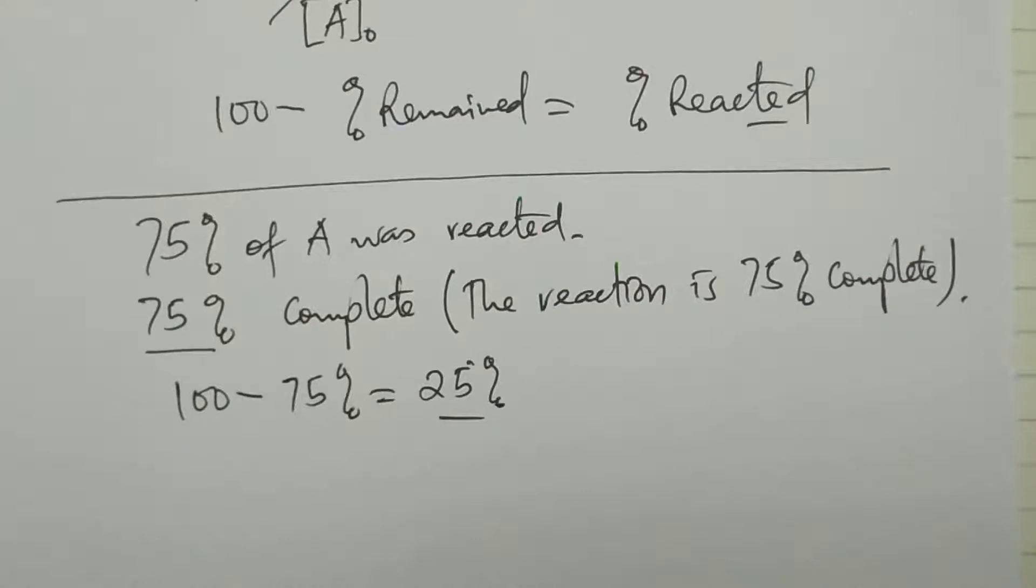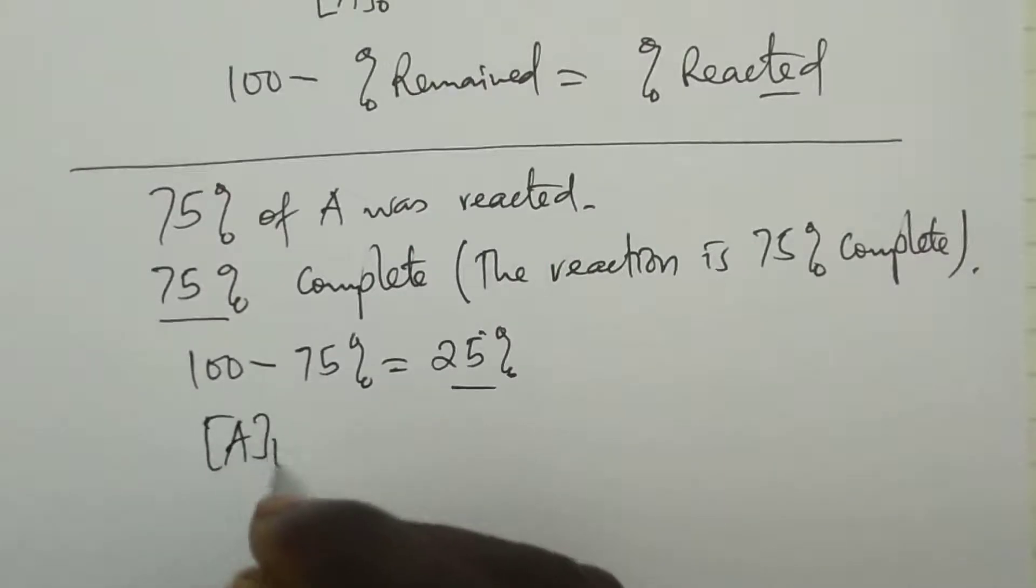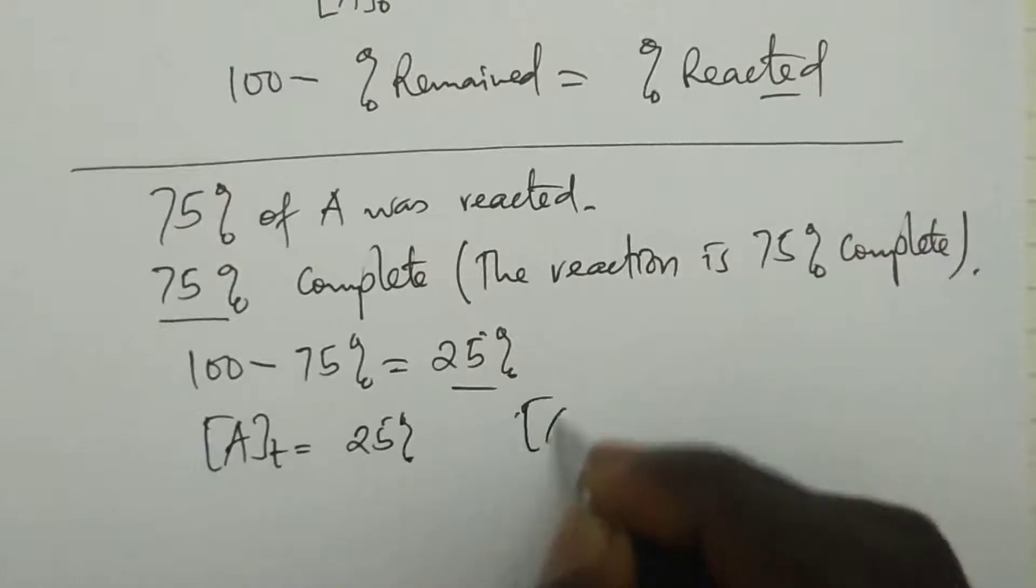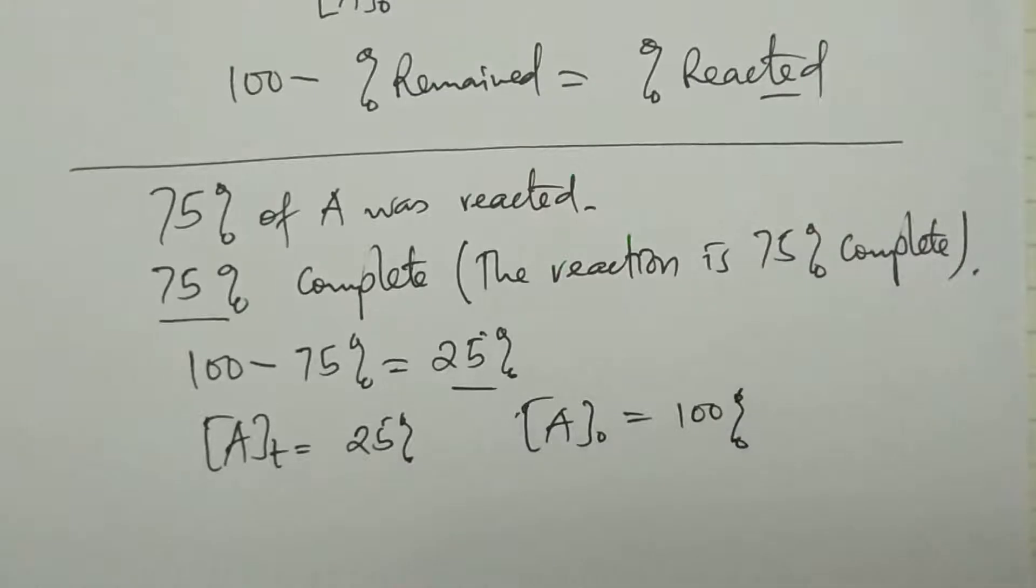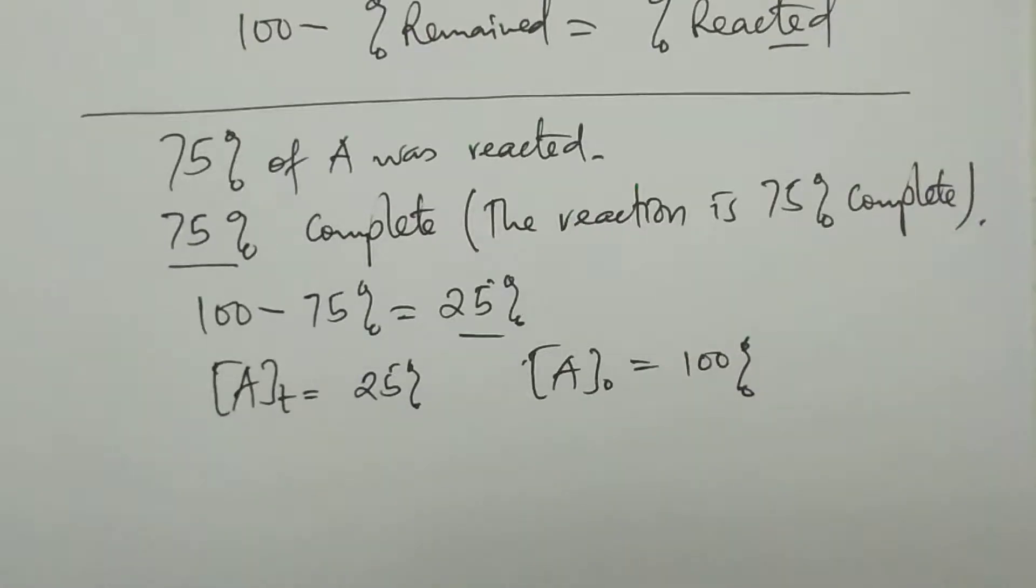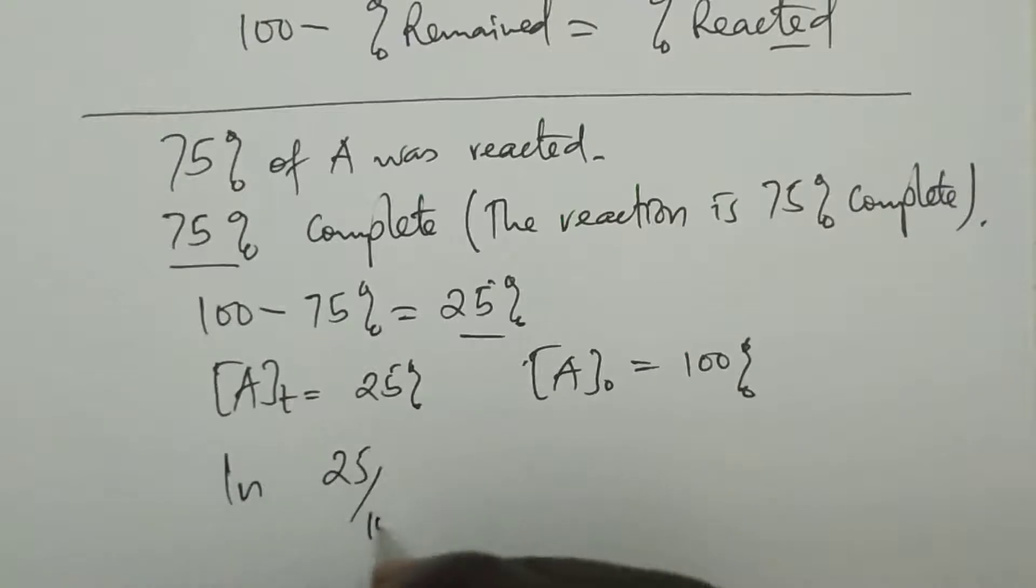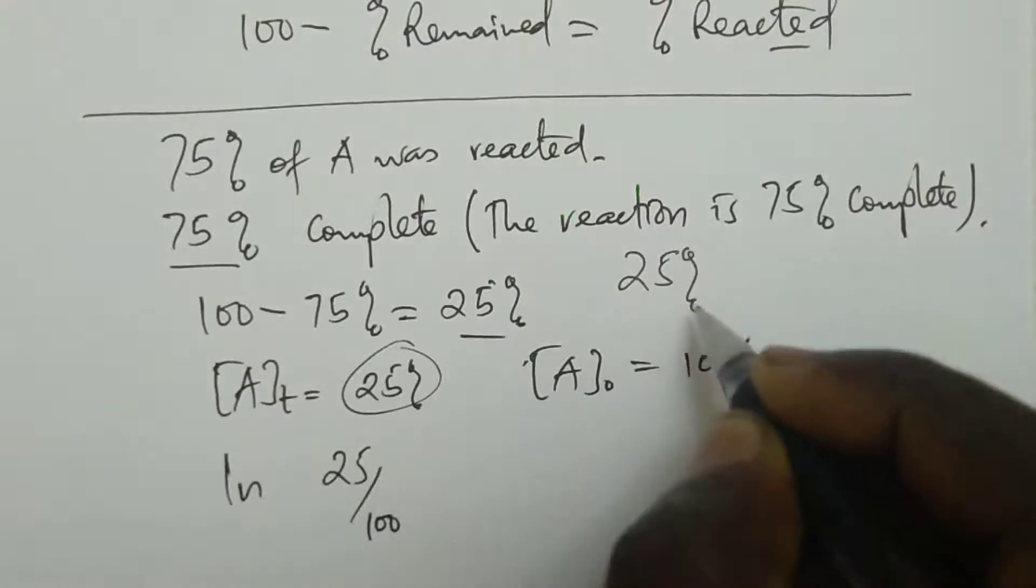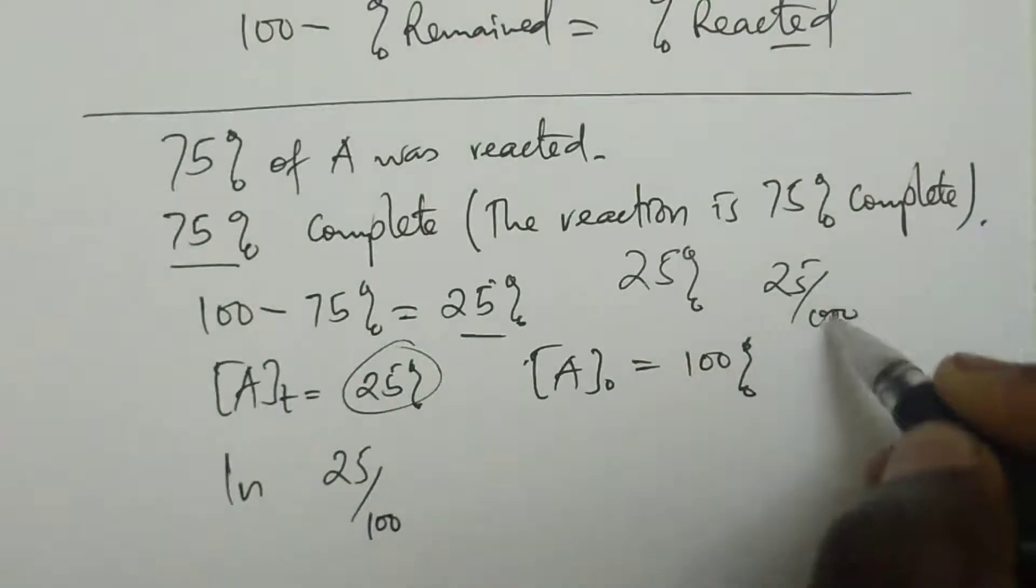We know the total percent of A was 100. What remains, concentration AT, is 25%. So if you need to calculate time from the rate constant, you'll use ln(25/100), or 0.25.